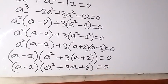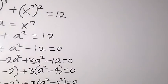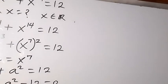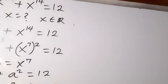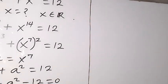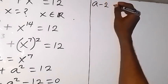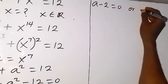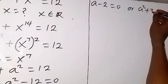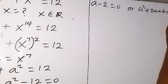We can equate each factor to 0, since they multiply to give 0 and either of them could be 0. So we have a minus 2 equals 0, or a squared plus 3a plus 6 equals 0.